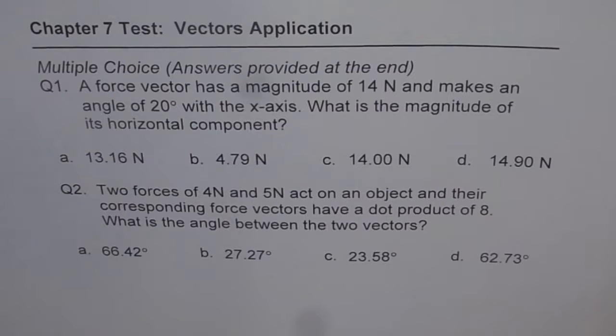Question number 2. Two forces of 4 newton and 5 newton act on an object and their corresponding force vectors have a dot product of 8. What is the angle between the two vectors? And the different options for angles are 66.42 degrees, 27.27 degrees, 23.58 degrees and 62.73 degrees.